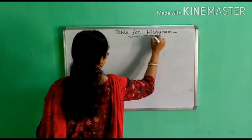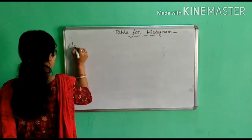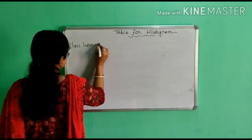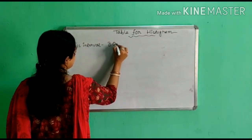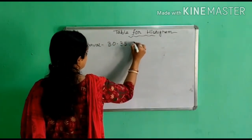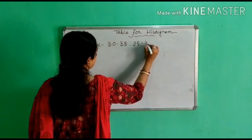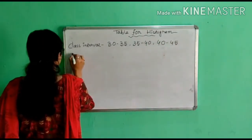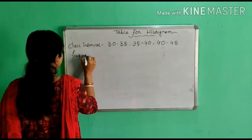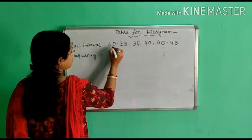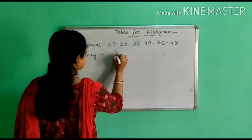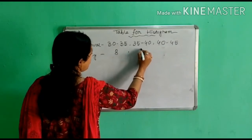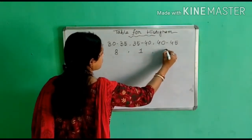Okay, so first is here class interval. Class interval that was started from 30 to 35, then 35 to 40, then 40 to 45. Then we have frequency. For 30 to 35 our frequency is 8, then 35 to 40 our frequency is 1, then 40 to 45 our frequency is 3.